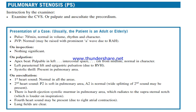On auscultation, first heart sound is normal in all areas. Second heart sound: P2 is soft in the pulmonary area; A2 is normal. Wide splitting of the second heart sound may be present. There is a harsh ejection systolic murmur in the pulmonary area which radiates to the suprasternal notch and is louder on inspiration. A fourth heart sound may be present due to right atrial contraction.